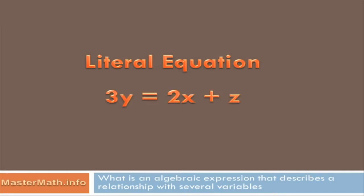It's of a form like 3y equals 2x plus z. We've got three variables there, but we could have four, five, we could have a hundred.